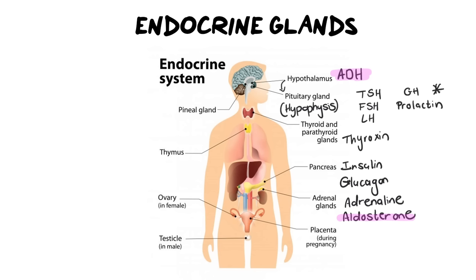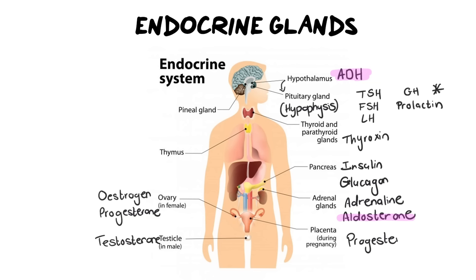Moving on to our ovaries and testes: ovaries secrete estrogen and progesterone, while testes produce testosterone. I also want to include the placenta, because it also produces progesterone and takes over that job from the ovaries — specifically from the corpus luteum — once the placenta is formed. In grade 12, we do not need to know the thymus or the pineal gland, so we'll leave those out.